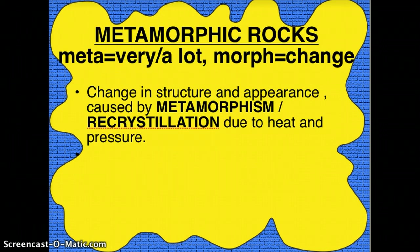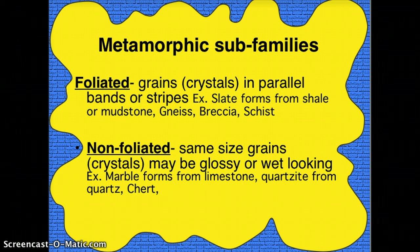The last family of rocks are metamorphic. 'Meta' meaning a lot and 'morph' meaning changes — these are rocks that have undergone a lot of changes. The change happens through their structure and appearance caused by recrystallization or metamorphism. The rocks are heated and pressurized, or cooked and smushed, so that the crystals rearrange themselves and change.